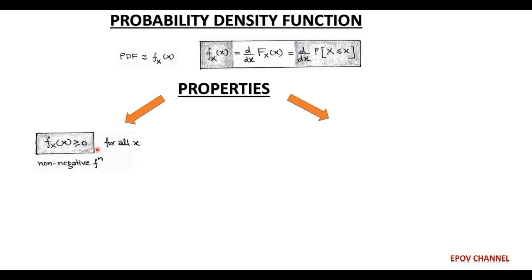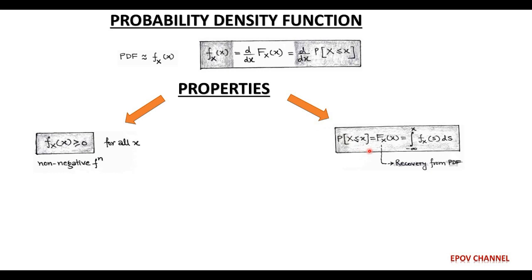The next property is that the cumulative distribution function, capital F, can be recovered from the probability density function using the formula: capital F(x) equals the integration of small f(s) ds, where small s is taken as a real value for convenience, and the limits of s run from minus infinity to small x.